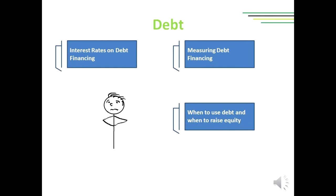Debt financing occurs when a firm raises money for working capital or capital expenditures by selling bonds, bills, or notes to individuals and institutional investors. In return for lending the money, the individuals or institutions become creditors and receive a promise that the principal and interest on the debt will be repaid. The other way to raise capital in the debt market is to issue shares of stock in a public offering — this is called equity financing. When a company needs money, it can take three roads to obtain financing: cash, debt, or some hybrid of the two. Equity represents an ownership stake in the company; it gives the shareholder a claim on future earnings but does not need to be paid back. If a company goes bankrupt, equity holders are the last in line to receive money, while the first investors in line are the lenders — those who provide the company with debt financing.